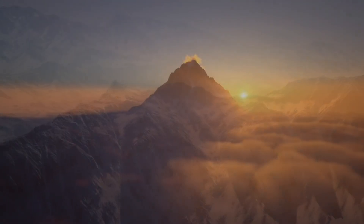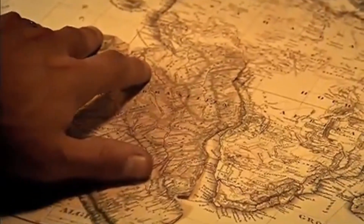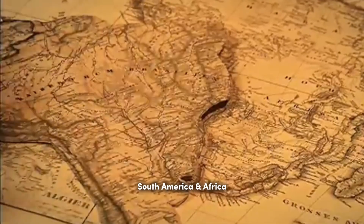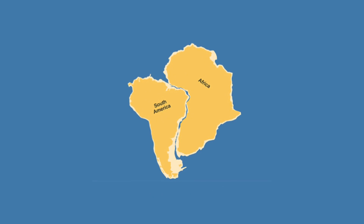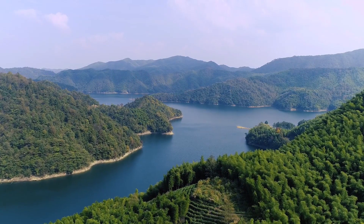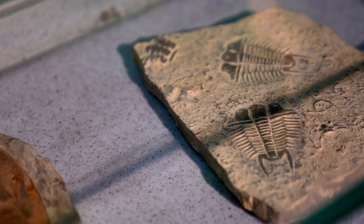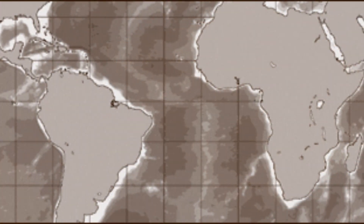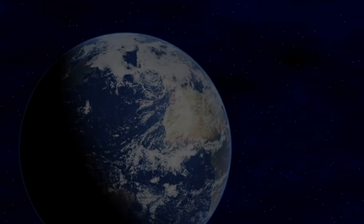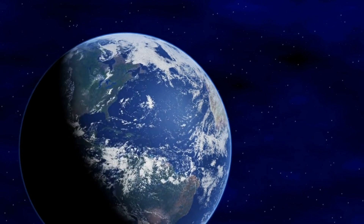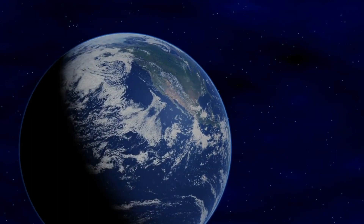The most famous example of this puzzle-like fit is the east coast of South America and the west coast of Africa. These coastlines appear to match perfectly, suggesting they were once joined. If you look closely, the bulge of Eastern South America nestles neatly into the concave curve of Western Africa — one of the key inspirations for Wegener's theory. But the fit is more than just visual; it's backed by substantial geological and fossil evidence.